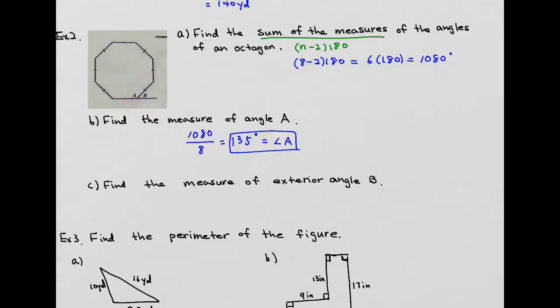So then your angle B is going to be 180 minus your angle A, which gives you 45 degrees.